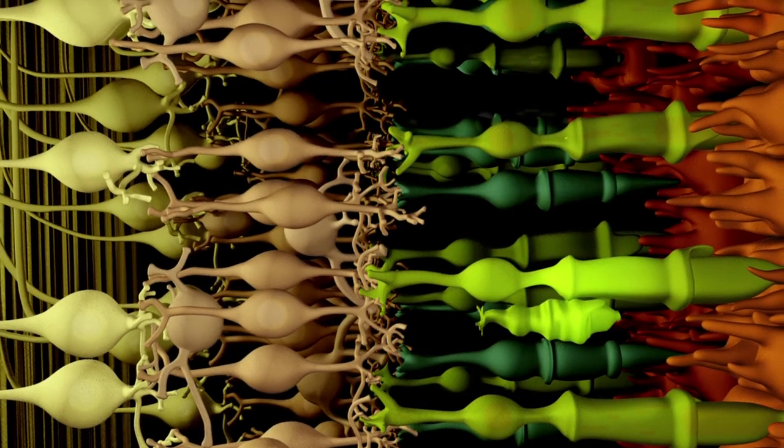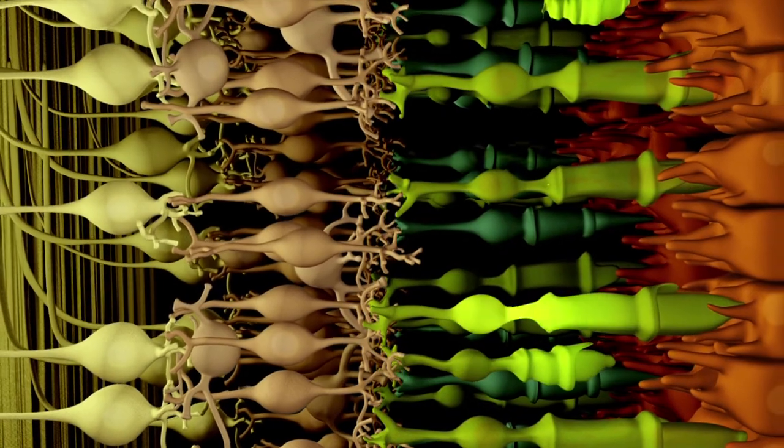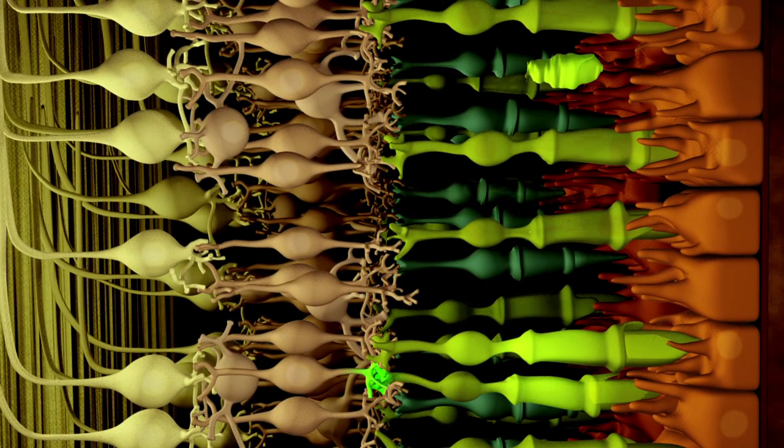In the lab, researchers have been successful in restoring some vision to mice with damaged retinas. Currently, cells from human eye organ donations are being used for transplantation research.